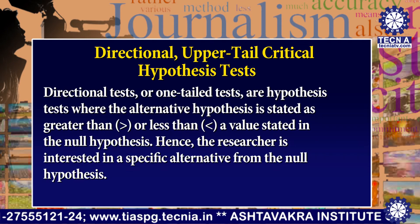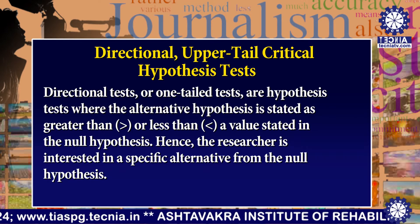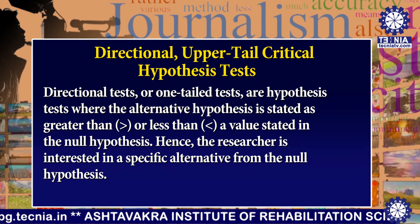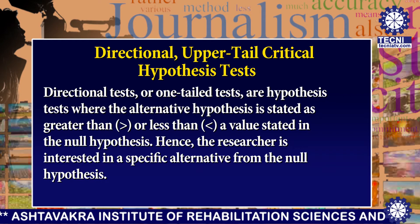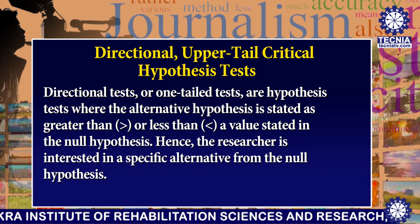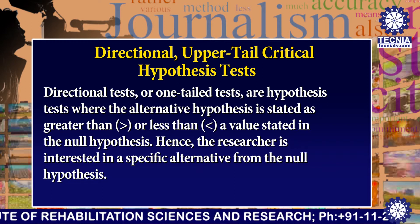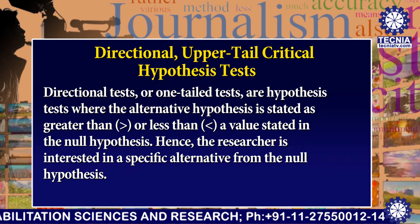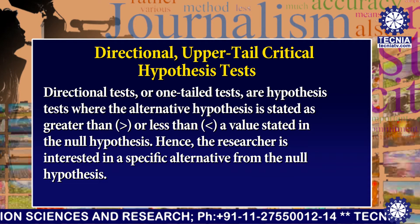What is a directional test or one-tail test? These are hypothesis tests where the alternative hypothesis is stated as greater than or less than a value stated in the null hypothesis. Hence the researcher is interested in a specific alternative from the null hypothesis.